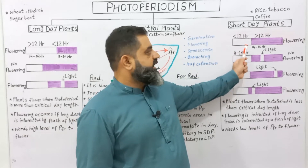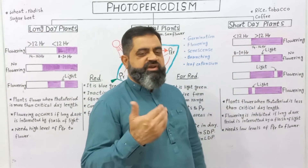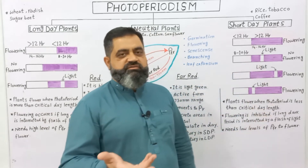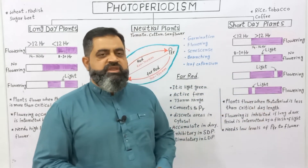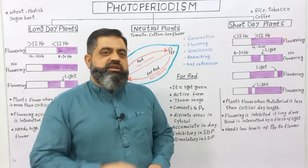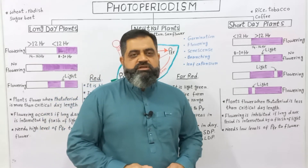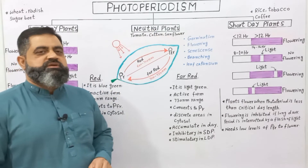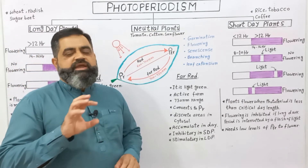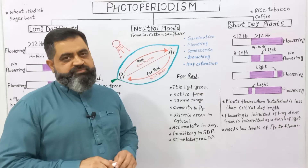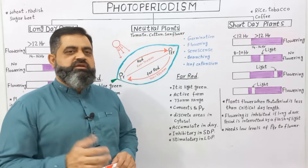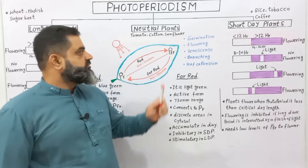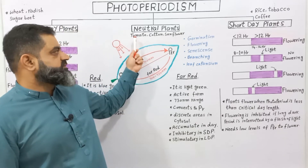Examples of short day plants are rice, tobacco, and coffee. These plants need less than 12 hours — usually 8 to 10 hours of day — and more than 12 hours of night or dark period, which is from 14 to 16 hours. The third category of plants is known as day neutral plants; day neutral plants do not require any photoperiod and can flower in any environment or weather condition.